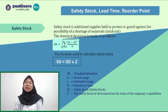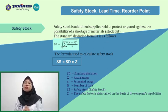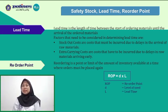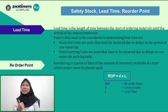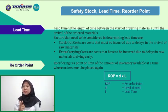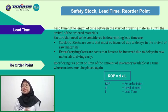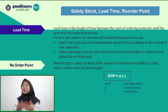Next, safety stock, lead time, and reorder point. Safety stock is additional supplies kept to protect against the possibility of stockout of material. For the formula, you can view the screen. Lead time is the length of time between the start of ordering material until the arrival of the ordered material. Factors to consider in determining lead time are: 1. Stockout cost — costs incurred due to delay in the arrival of raw material; 2. Extra carrying cost — costs incurred due to raw material arriving early. Reorder point is the point or limit of the amount of inventory at which an order must be placed again. For the formula, you can view it on the screen.